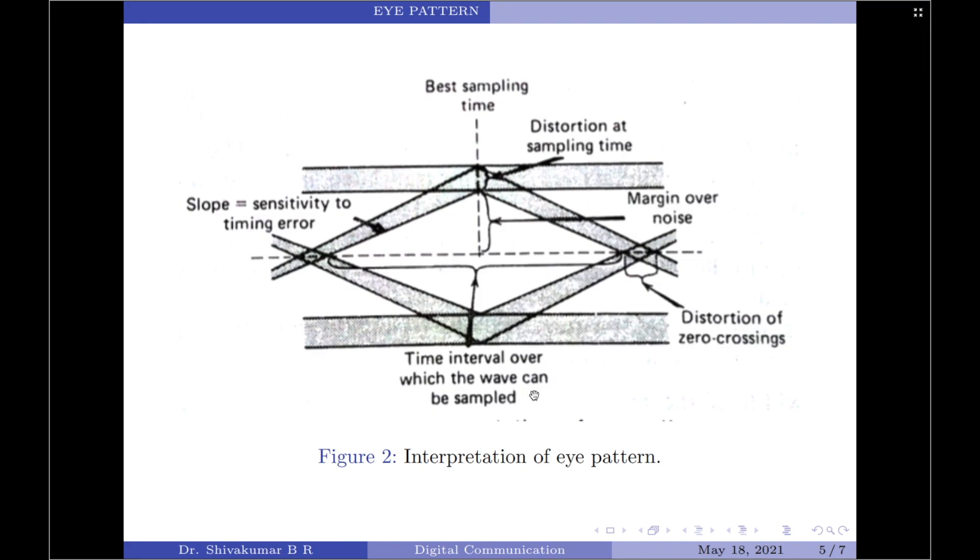Therefore, we should now note that the preferred or the best sampling time for the received signal is the instant at which the eye is open its widest. So this particular time instant where the eye is open its widest will be the best sampling time for the received signal.